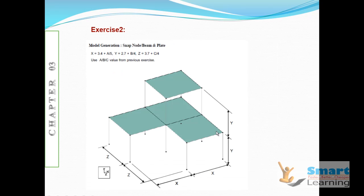In Exercise 2, you will be creating this type of structure with X, Y, and Z dimensions. There is a ratio between X, Y, and Z which you can follow. Write it down and derive the values of a, b, and z as needed. Based on that, you can create a structure by copying floor to floor and to the top floor, then create the plates.